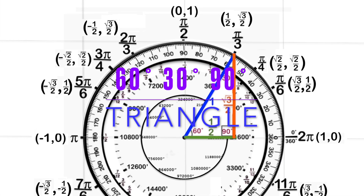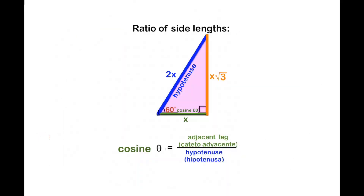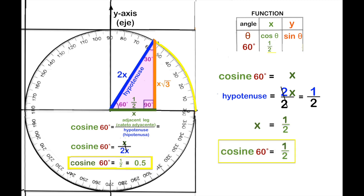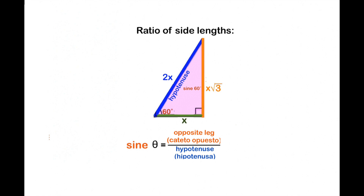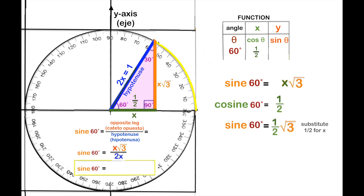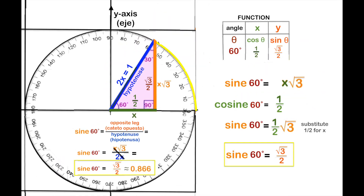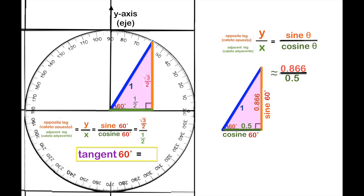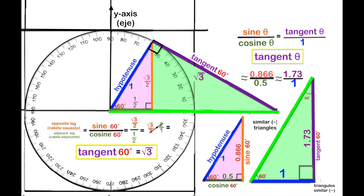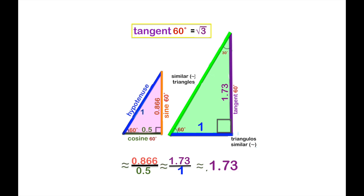Let's study a 60-30-90 degree triangle. Cosine is adjacent over hypotenuse. Cosine of 60 degrees is 1 over 2. Sine is opposite over hypotenuse: x times square root of 3 over 2x. Sine of 60 degrees is square root of 3 over 2. Tangent is sine over cosine: square root of 3 over 2 divided by 1 over 2. Tangent of 60 degrees is square root of 3.